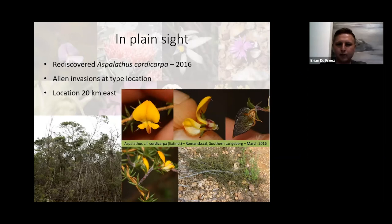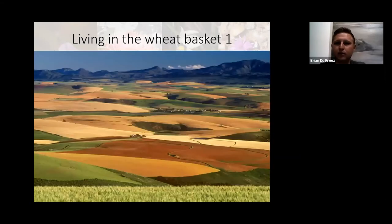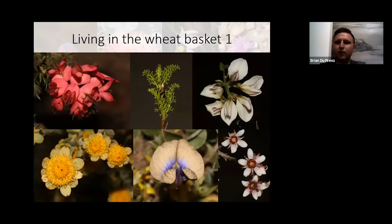Now we head into the Overberg, an area that has been extensively transformed, with between 90 to 95% of all Overberg renosterveld lost mostly to wheat and canola cultivation, with only a few small patches remaining — not due to farmers having sympathy for the vegetation, but rather not being able to sow those pieces. But even in these little pieces you have incredible diversity holding on by a thread. Interestingly, even Euadenia is occurring in renosterveld, which is rather strange.